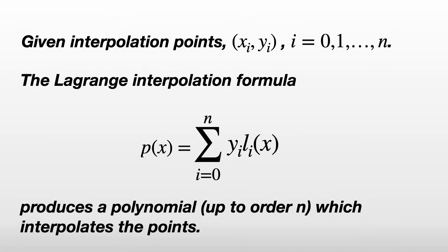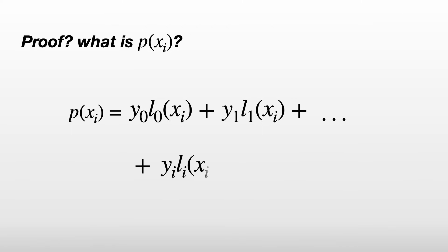This is straightforward to prove. Substituting x_i into the formula, we have p(x_i) equals y_0 l_0 plus y_1 l_1. Eventually we'll reach y_i l_i, and finally we have plus y_n.